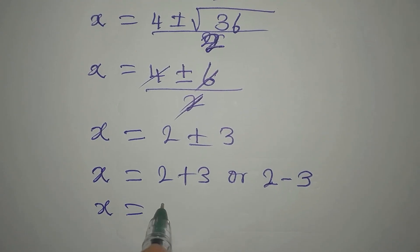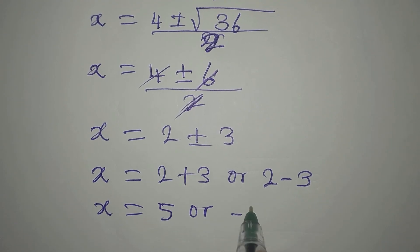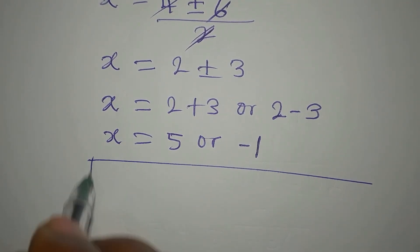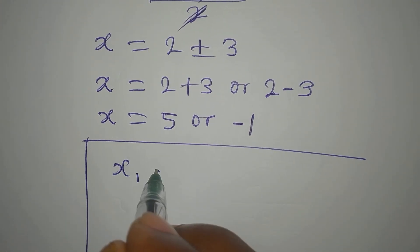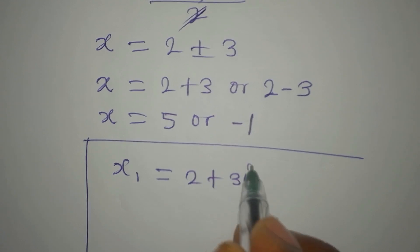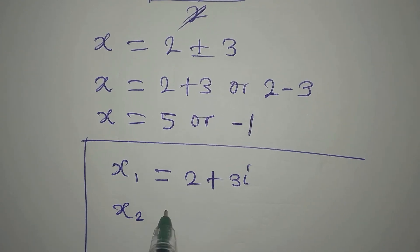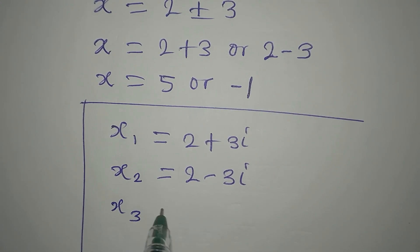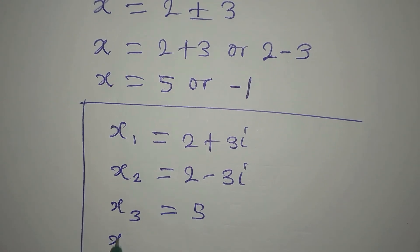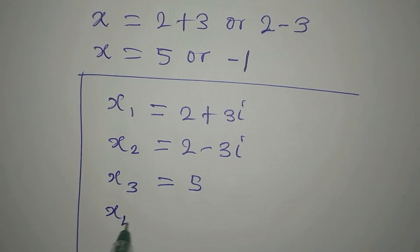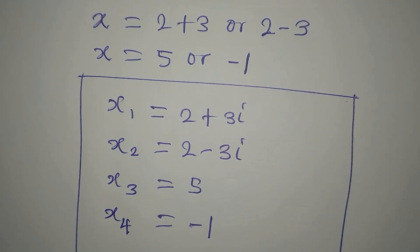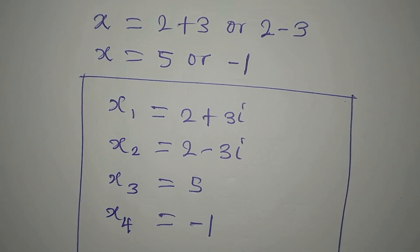So x equals 2 plus 3 which is 5, or x equals 2 minus 3 which is negative 1. Bringing all four solutions together: x1 equals 2 plus 3i, x2 equals 2 minus 3i, x3 equals 5, and x4 equals negative 1. These are the four solutions. If you have not subscribed to my channel, please subscribe for more videos.